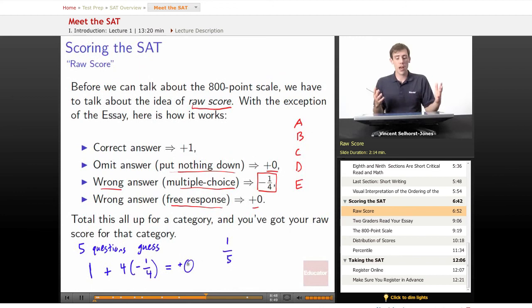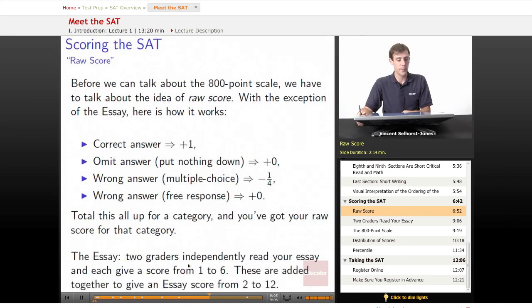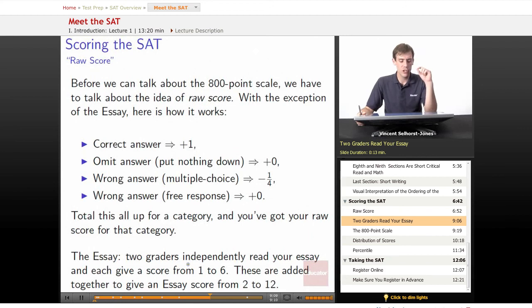Once you've got all of your numbers, once you figure out how you did on each question, if you got it right, you got it wrong, what type of question it was, you total them all up, and you've got your raw score for that category. So you total them all up for all of the math questions, and you've got that math category, that math section score, and so on for all the other ones as well. The essay is a little bit weird. That one has two graders will independently read your essay, and each will give it a score from one to six. Then those are added together, and that gives you an essay score from two to twelve.